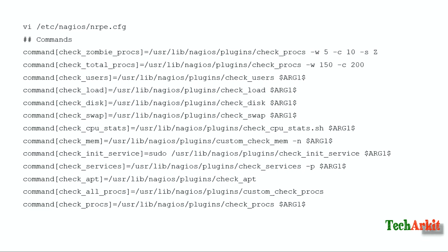After installing the NRPE client on the Linux server, edit the configuration file: vi /etc/nagios/nrpe.cfg and then add the commands. For example, I have added a few commands here, such as check_zombie_procs, which will verify the zombie processes on the system. The plugin path is /usr/lib/nagios/plugins/check_procs with warning and critical levels specified. You can also pass arguments so that the same argument will be called from the Nagios server configuration, or define values here and call the command using check_nrpe from the Nagios server.